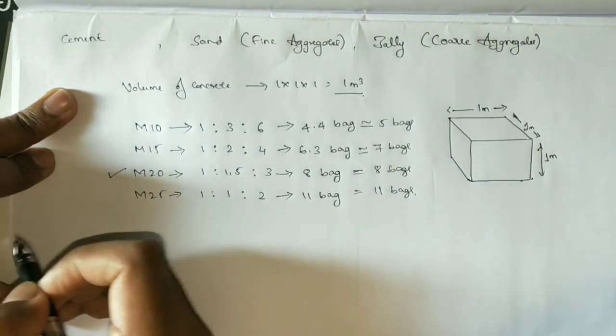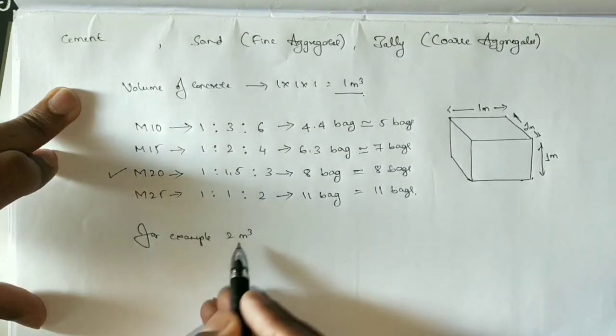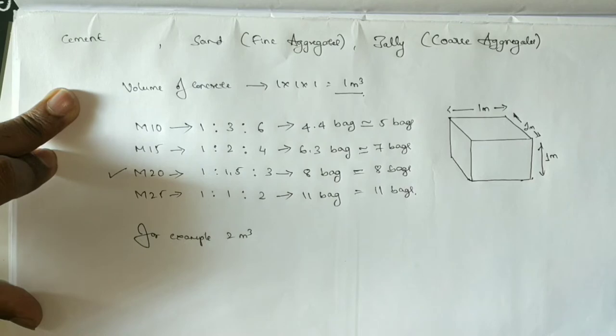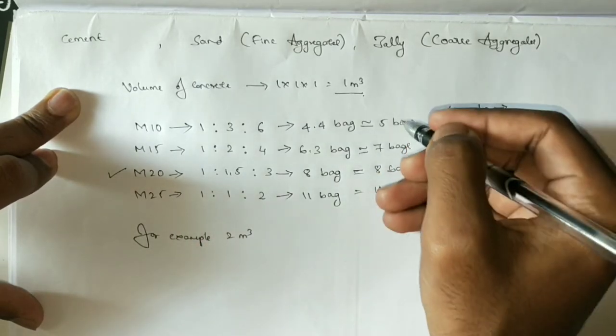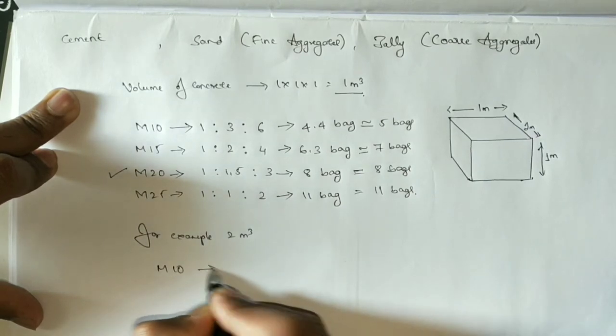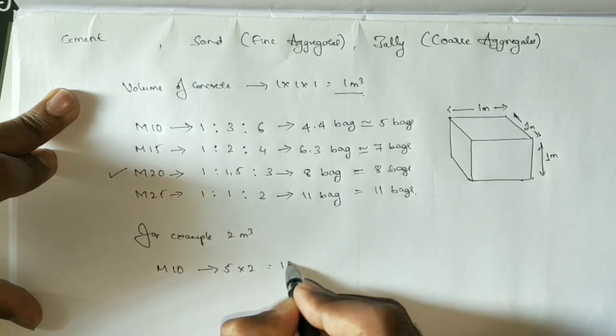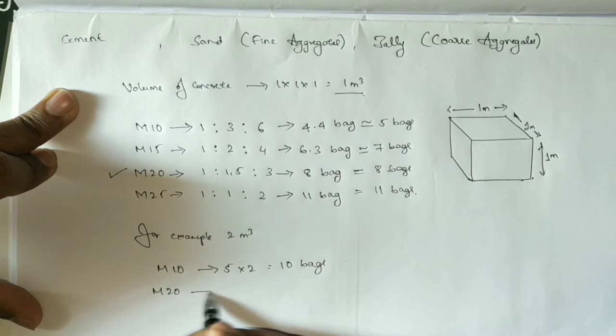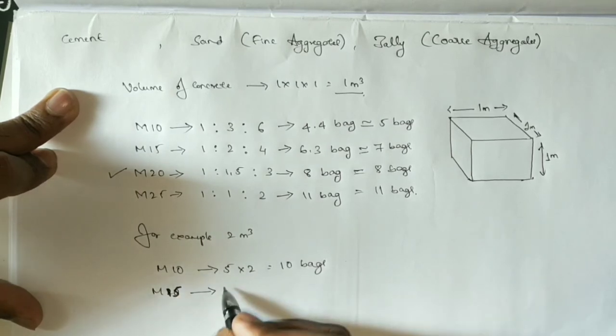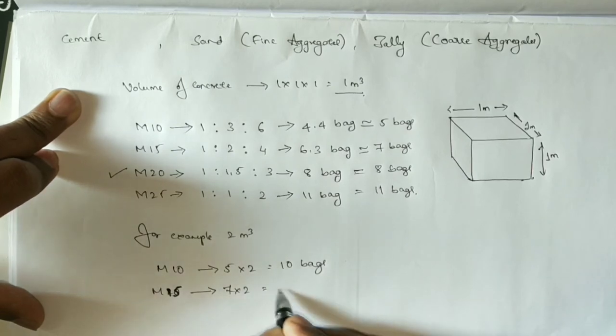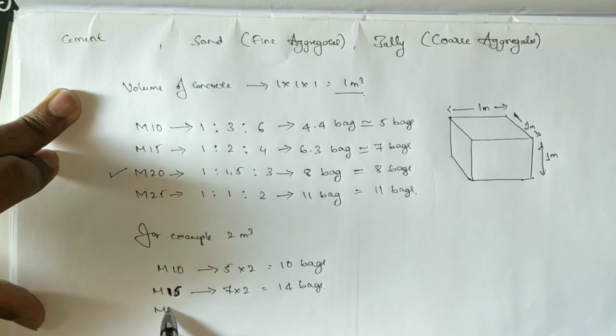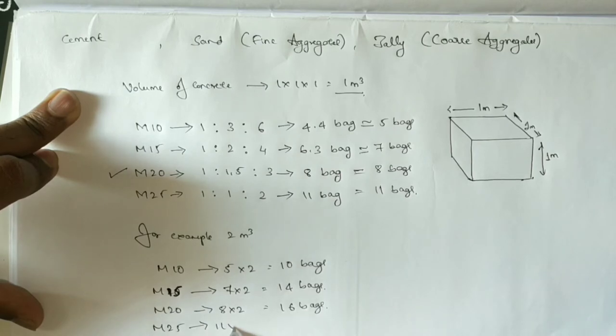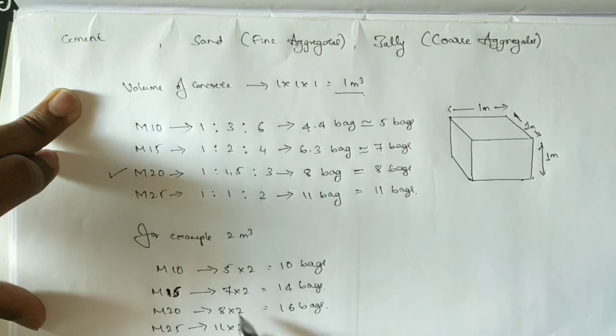For example, if you have 2 cubic meters of concrete, M10 grade would need 4.4 times 2, which is 10 bags. M15 grade: 7 times 2, which is 14 bags. M20 grade: 8 times 2, which is 16 bags. And M25 grade: 11 times 2, which is 22 bags of cement.